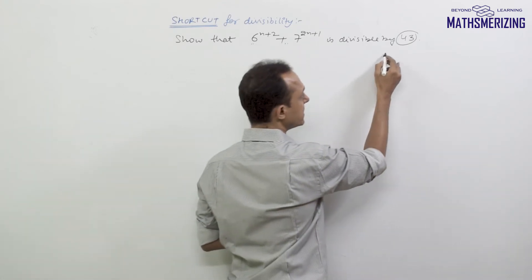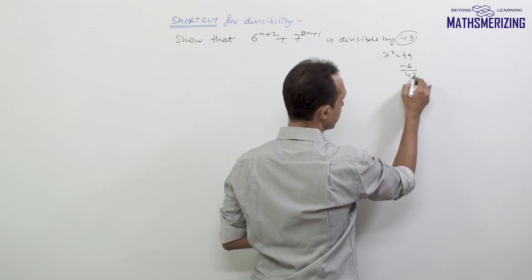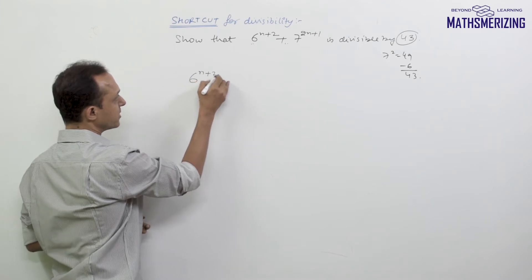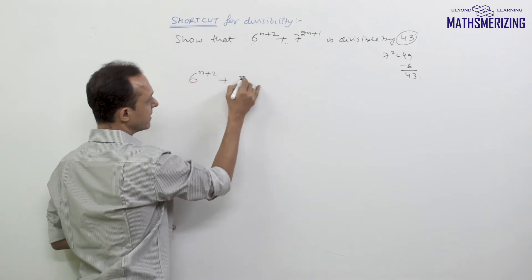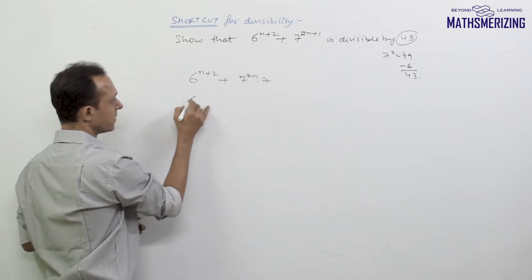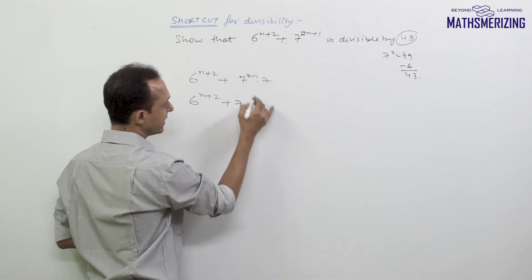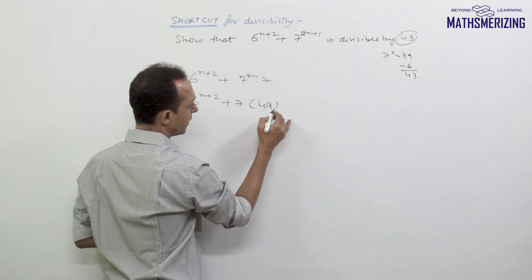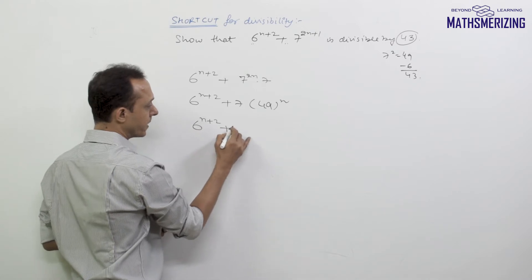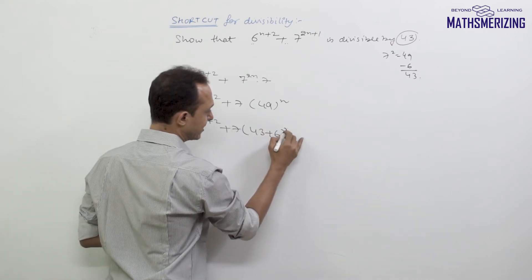What I know is 7 squared is simply 49, and 49 minus 6 is 43. So I'm going to write it as 6 to the power n plus 2, and then I'll write 7 to the power 2n into 7. So this is 6 to the power n plus 2, and then 7 first, and then 7 squared is 49 to the power n. So I'll write 6 to the power n plus 2, plus 7, and this is 43 plus 6 to the power n.